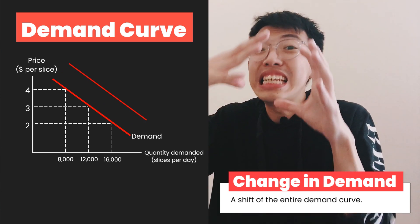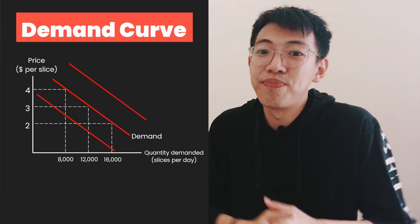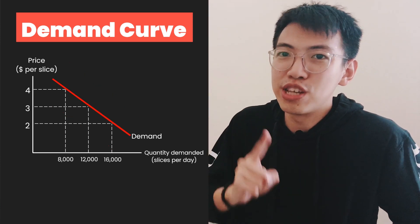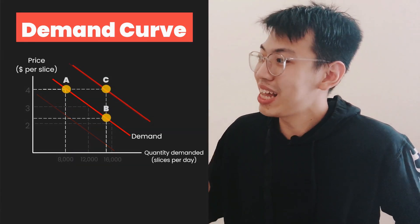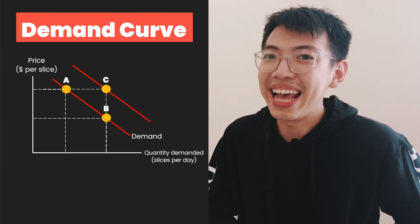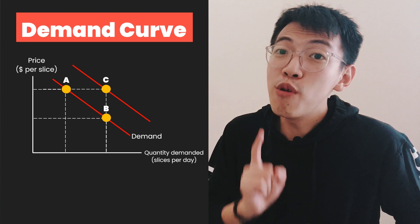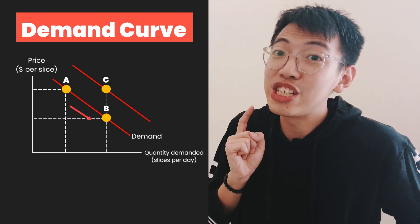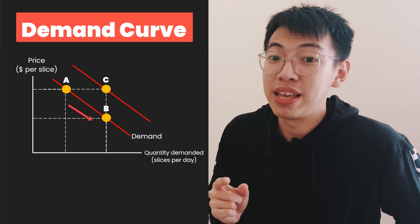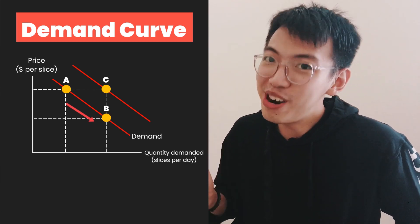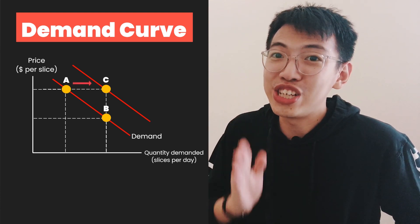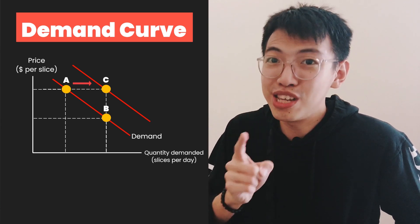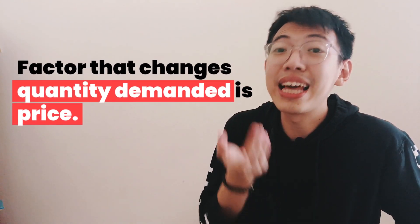A change in demand affects the entire demand curve. If demand increases, it will shift the demand curve to the right. But if demand decreases, it will shift the demand curve to the left. Look at this graph — there are three points: A, B, and C. Movement along A to B is a change in quantity demanded along the curve due to price. But movement between A and C is a change in demand — the price doesn't change, but the demand changes. So the factor that changes quantity demanded is price.